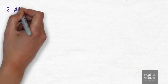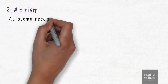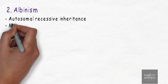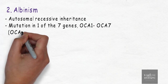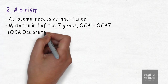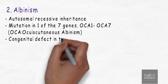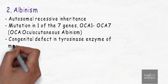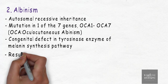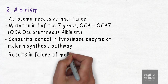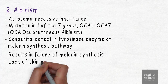Another topic is albinism, which has an autosomal recessive inheritance pattern. It occurs as a result of mutation in one of seven genes OCA1 to OCA7, where OCA stands for oculocutaneous albinism. As a result of this mutation there is a congenital defect in the tyrosinase enzyme of the melanin synthesis pathway, which results in failure of melanin synthesis such that there is lack of skin and eye color.